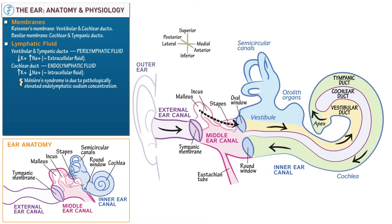In this process, the auditory sensory organ — the organ of Corti — which lies along the basilar membrane, is activated for sound detection. High frequency sounds activate hair cells at the base of the cochlea, near the oval and round windows, whereas low frequency sounds activate hair cells at the apex of the cochlea. The basilar membrane is thinnest at its base and widest at its apex.